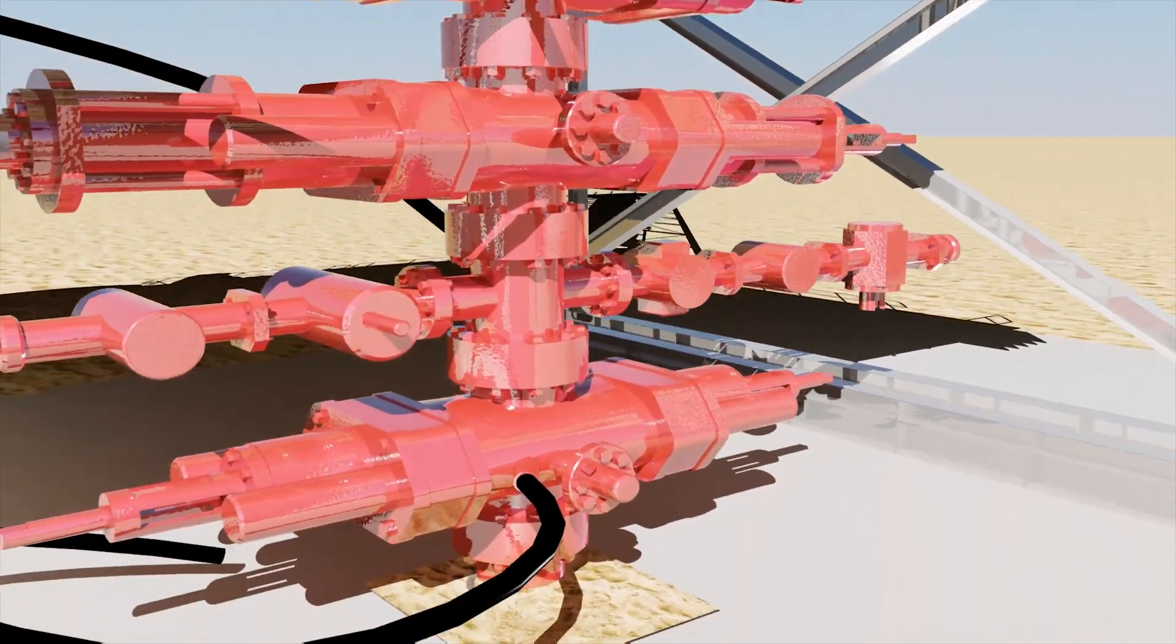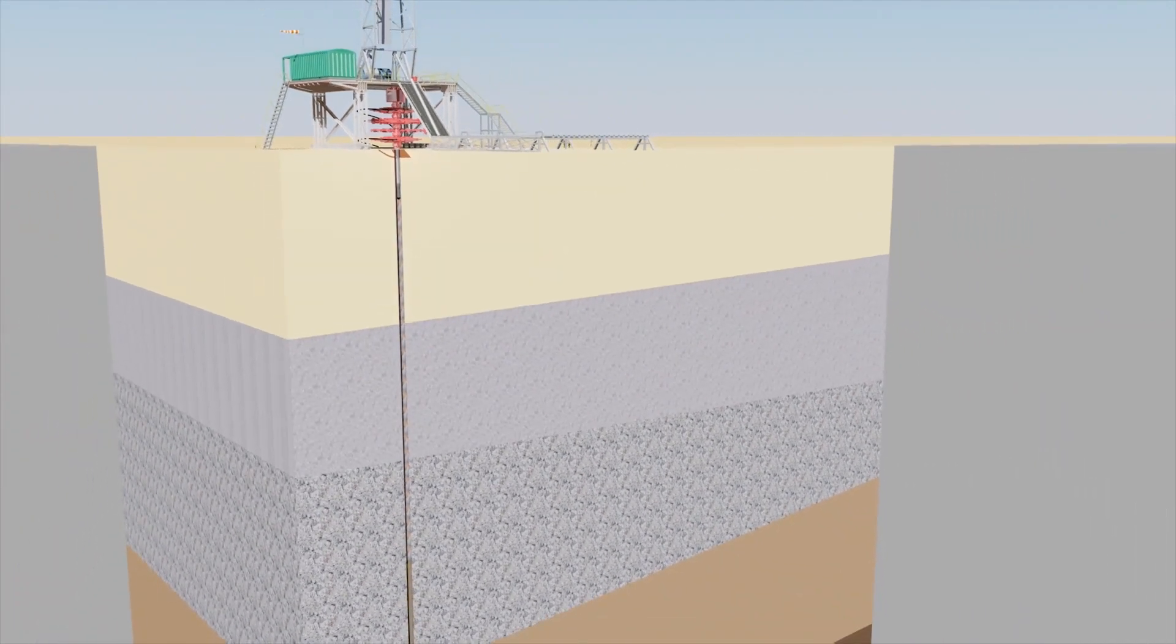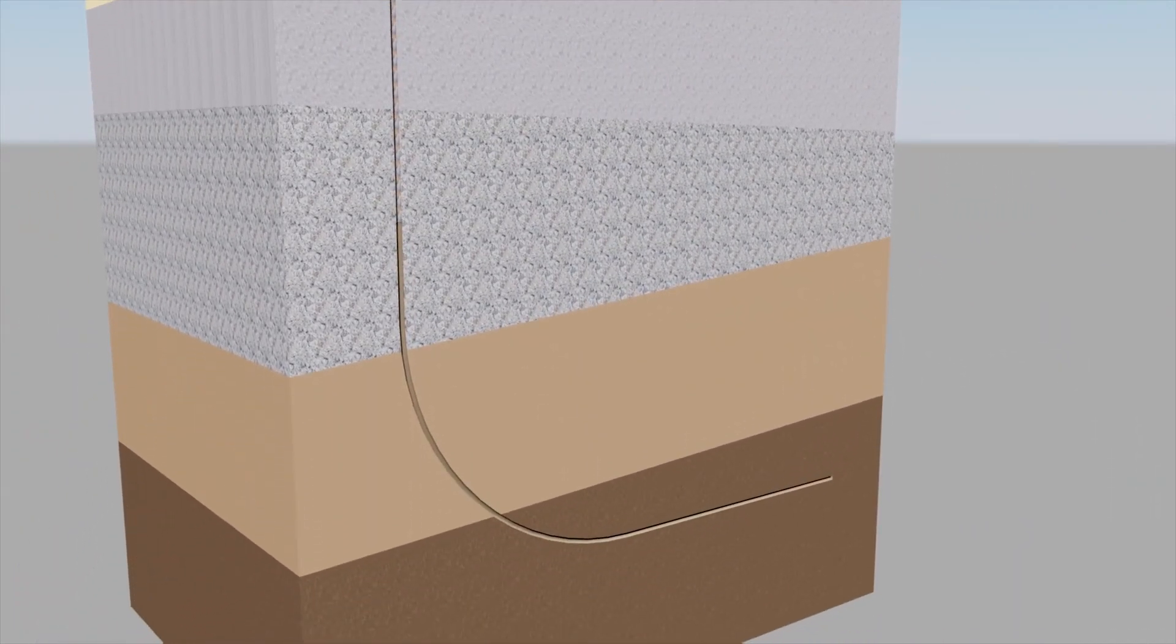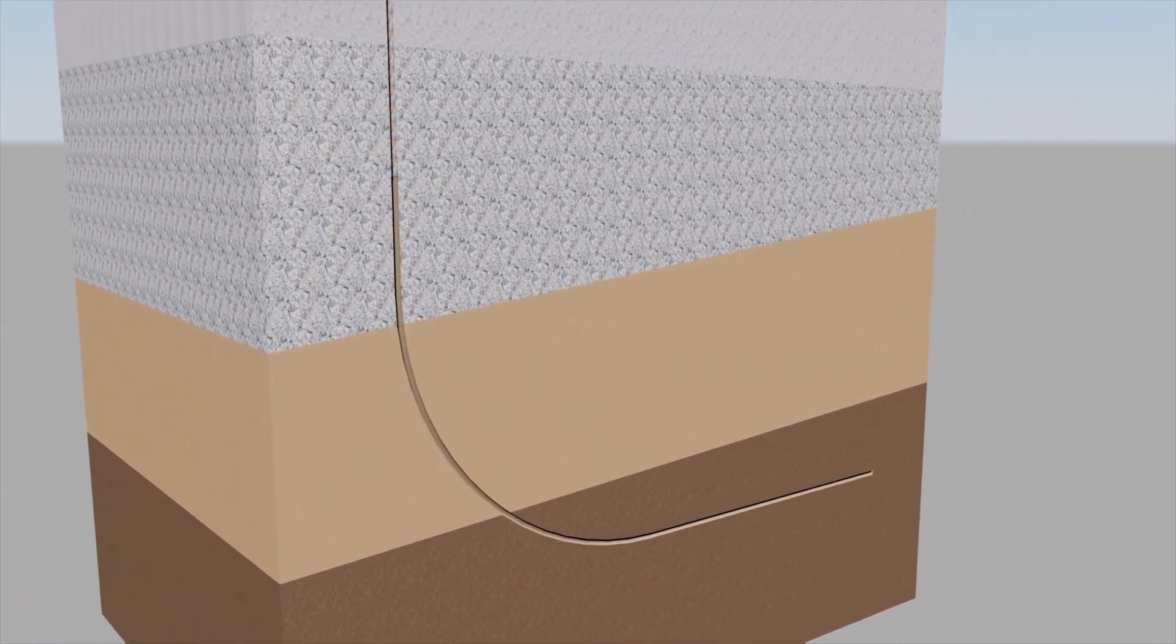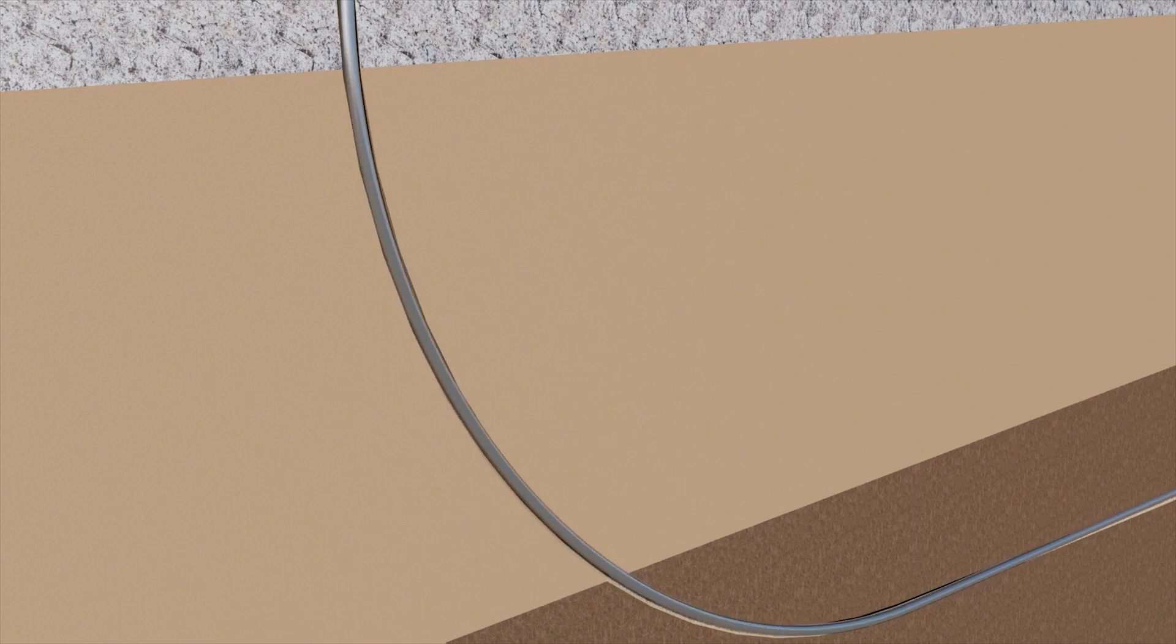This multi-set open hole packers and integrated liner hanger packer completion system is a one trip installation, set in place by hydraulic pressure. We are now ready to set our open hole packers and integrated liner hanger packer completion system.